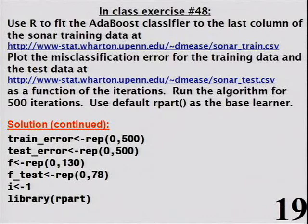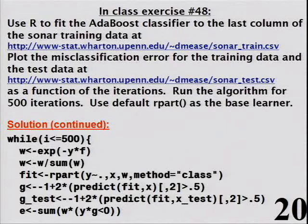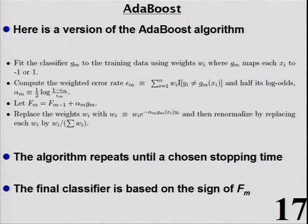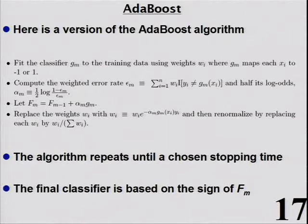Here's the loop: while i ≤ 500, compute the weight as exp(-y × f) — this is equivalent to doing the weight updates iteratively. Fit rpart with the weight argument, starting at uniform weights of 1/n. g is the prediction from rpart: if probability > 0.5, it's +1; otherwise -1. e is the weighted error rate — wherever y and g differ in sign, times w, summed up. Then alpha = 0.5 × log((1-e)/e).